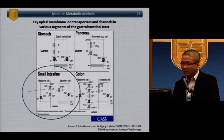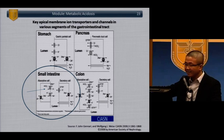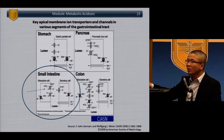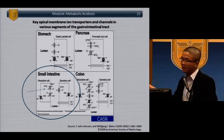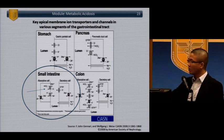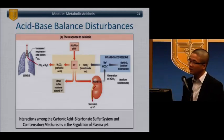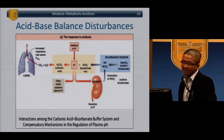Looking at this slide — particularly small intestine — it illustrates why a diarrhea patient has a normal anion gap: you lose bicarb, hold on to chloride, and there's no difference in the anion gap. So acid-base and balance disturbances interact through the carbonic hydrate bicarb buffer system.